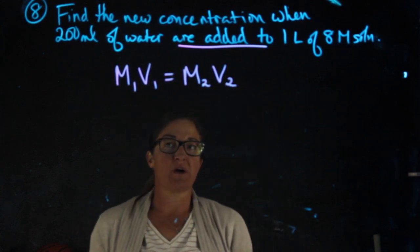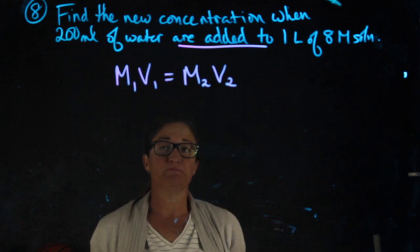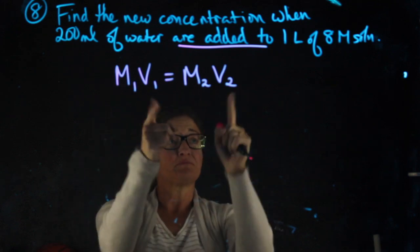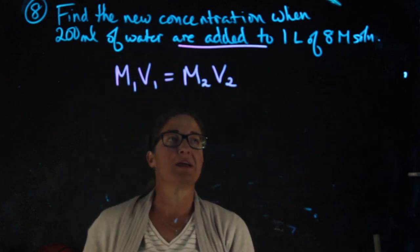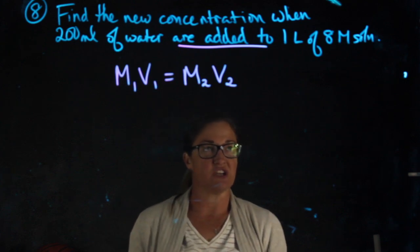For a dilution problem we want to use M1V1 equals M2V2. M's molarity, V is volume, and volume can be in any units as long as it's the same on both sides of the equation.